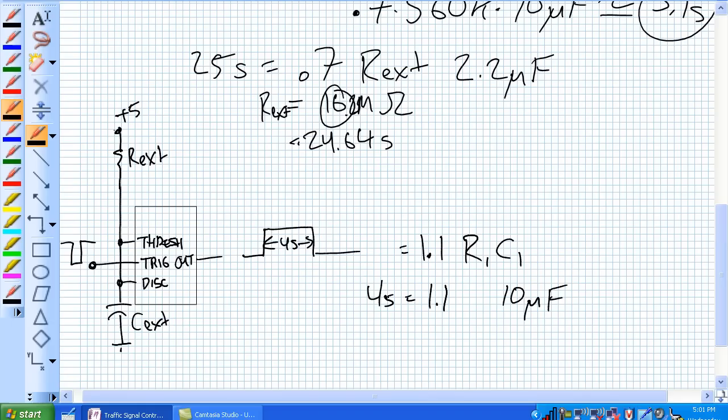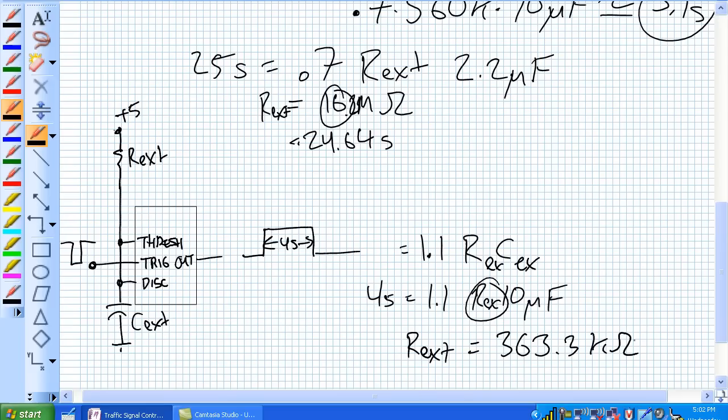What's our external and C external for 555 set up in this manner? It should be a pretty familiar formula. It's actually very much just 1.1 R1 C1. Let's pull a 10 microfarad capacitor out of the drawer. We want it to be four seconds. What's our R external? Our external should be 363.3 kilo-ohms. We don't really have that, but we do have a 360 kilo-ohm. With a 360 kilo-ohm? Answer is 3.96 seconds. Very, very close.